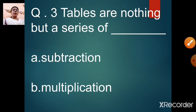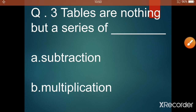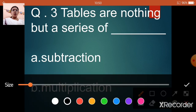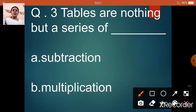Question number 3: tables are nothing but a series of dash. Option A: subtraction. Option B: multiplication. What are tables? Just nothing but a series of multiplication. Tables are nothing but a series of multiplication, so option B is correct.